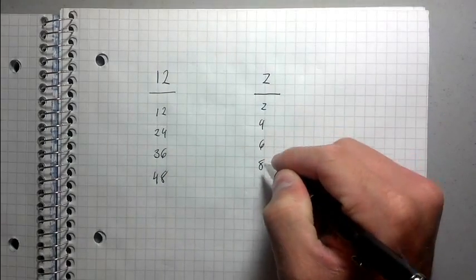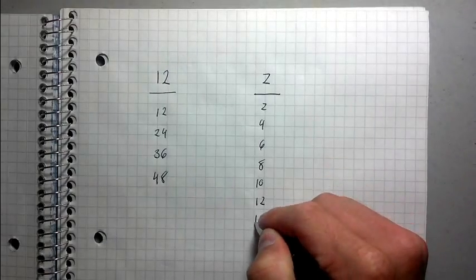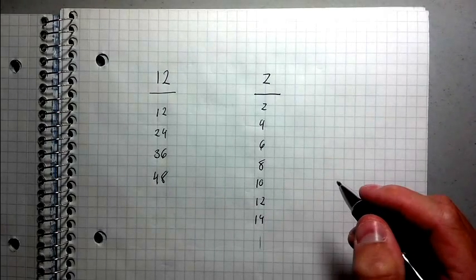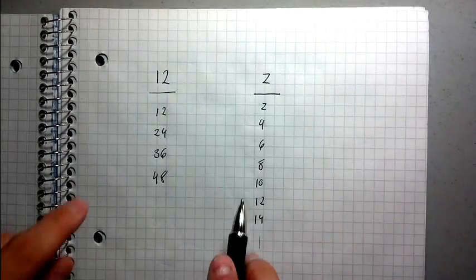2, 4, 6, 8, 10, 12, 14, et cetera, et cetera. Okay. Notice something. So what's the least common multiple?